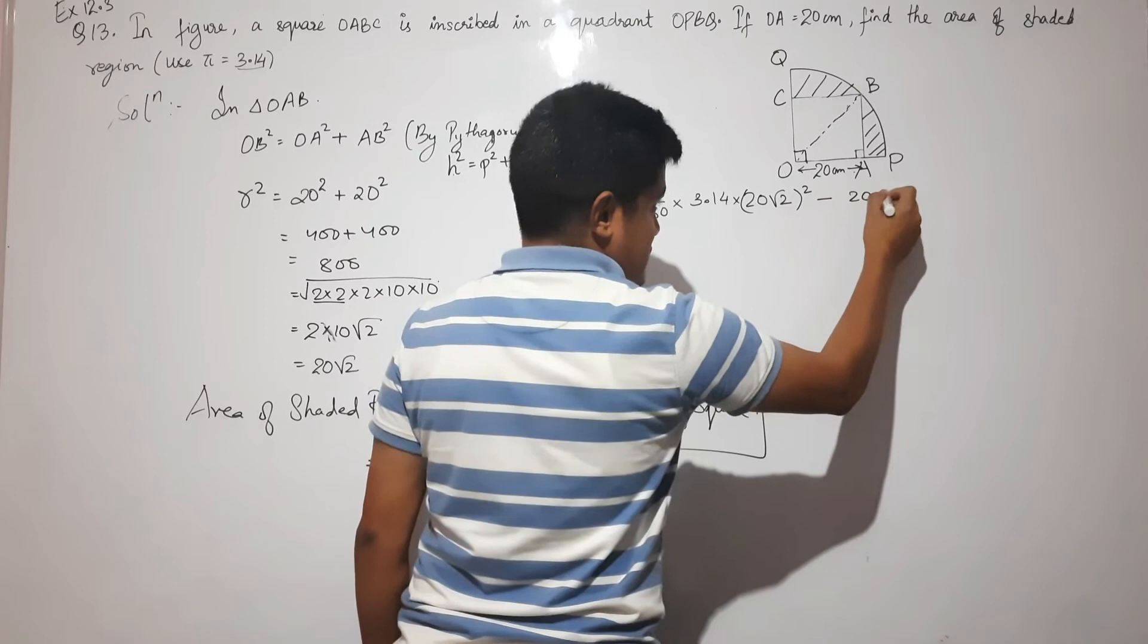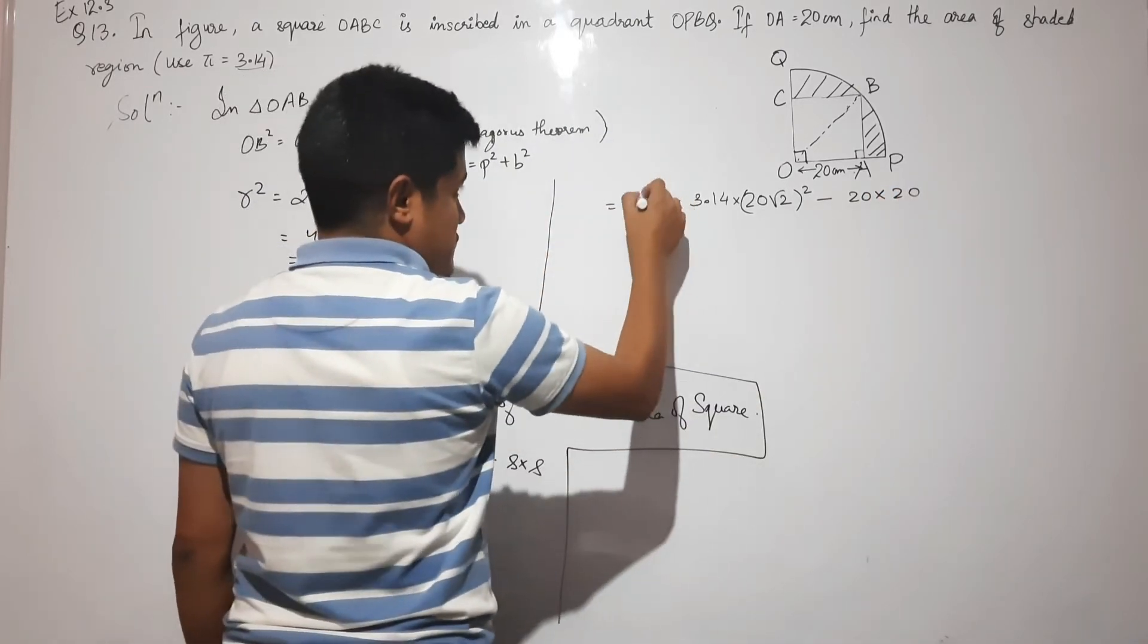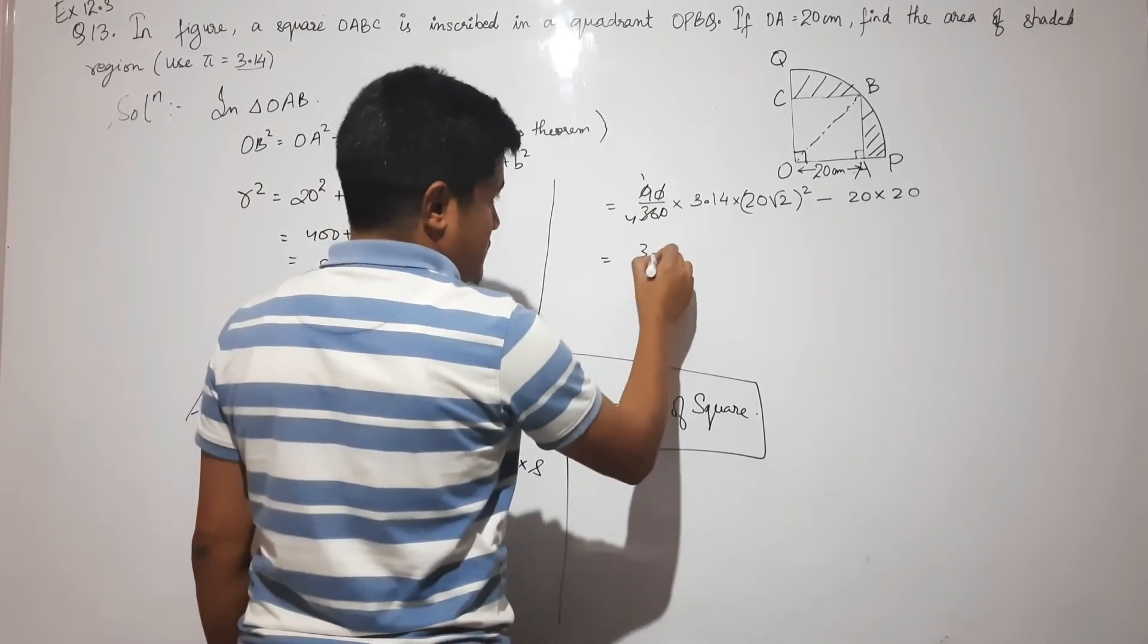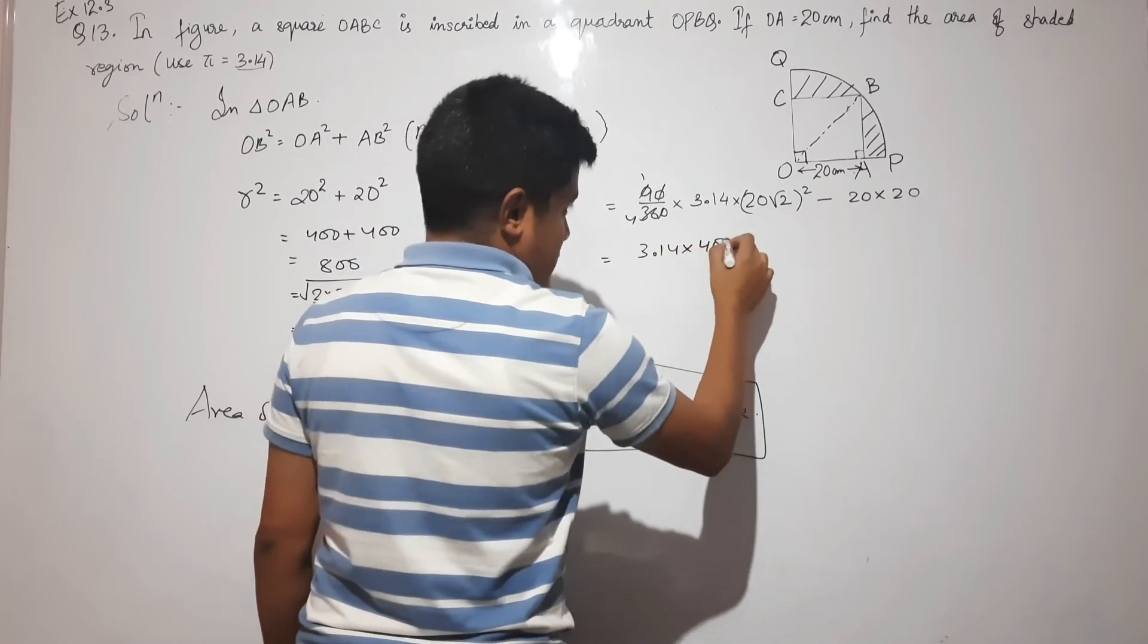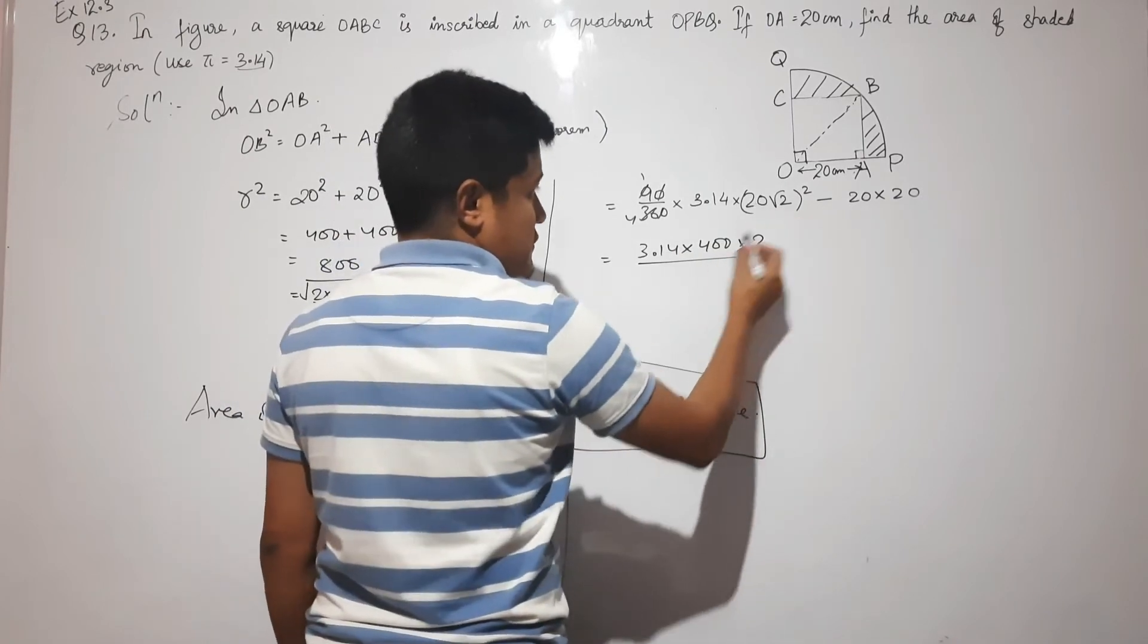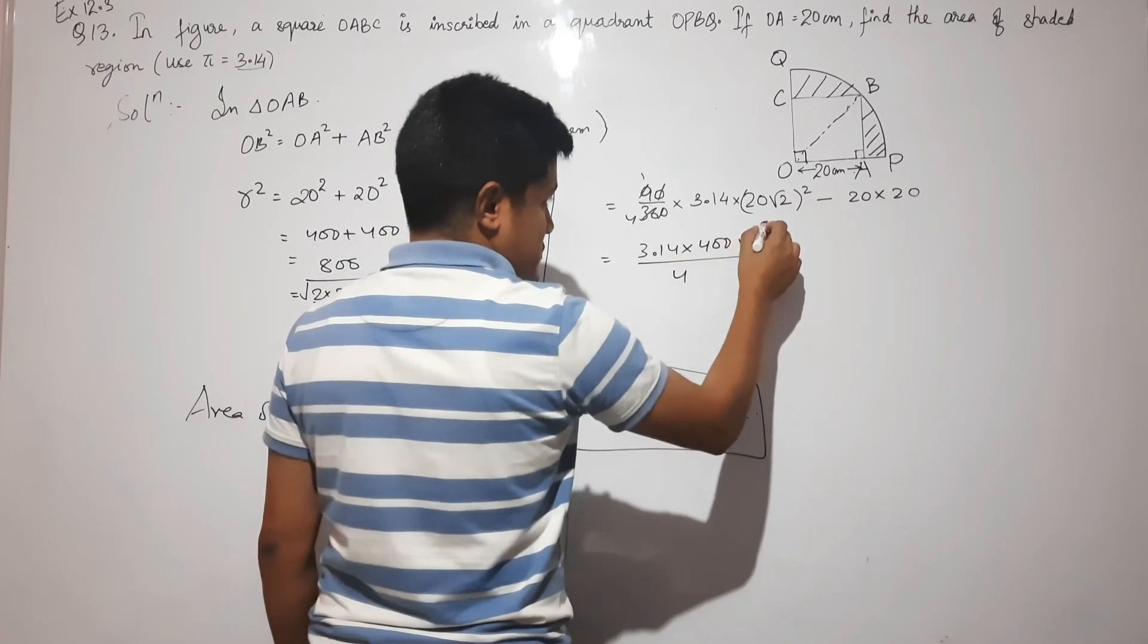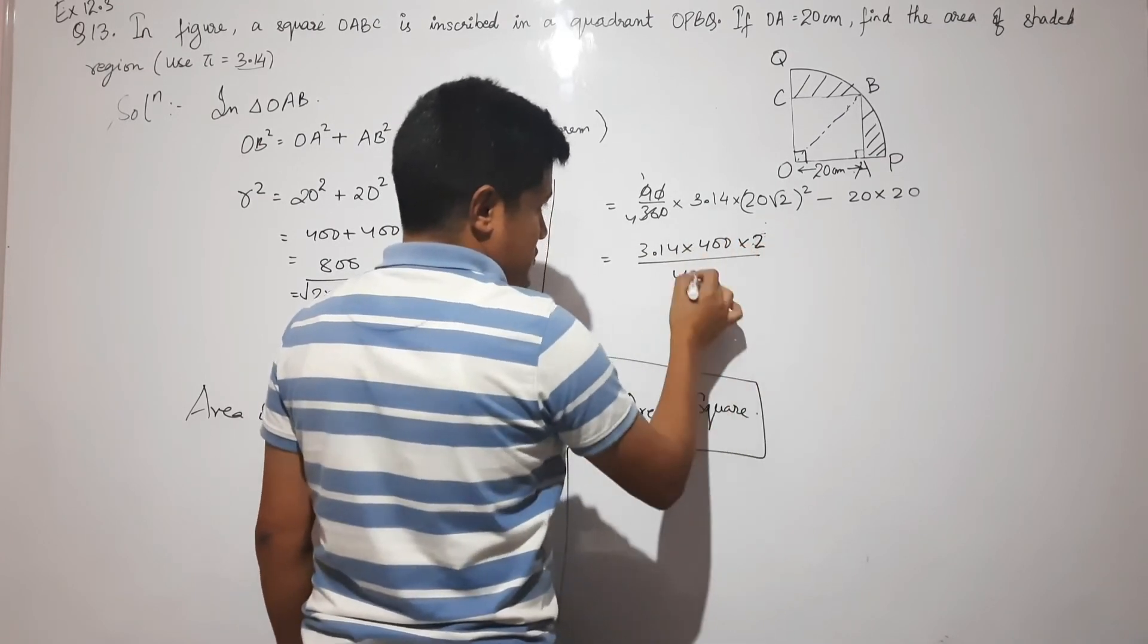side × side, which is 20 × 20 (area of the square). So 90/360 × 3.14 × 20² × 2. Now 20² = 400 and (√2)² = 2, so 400 × 2 = 800. Dividing 90/360 gives us 1/4, so 1/4 × 3.14 × 800.